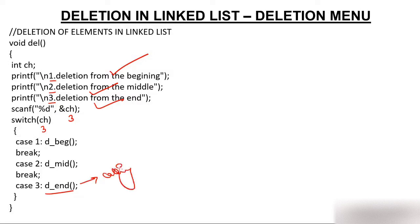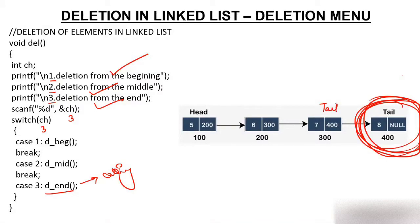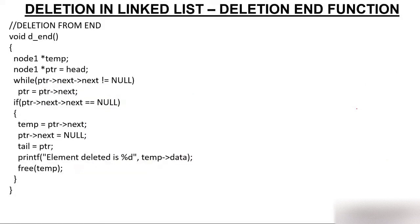We have a linked list and we have to delete the last node. When you delete this last node, the tail will come to the second-last node. Head represents the first node and tail represents the last node — so only this will change. Let's start with the coding.